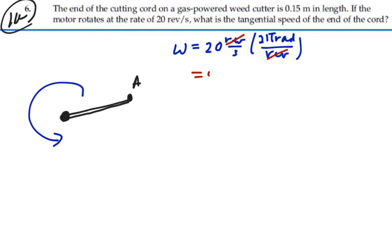and we end up with 40π radians per second, or if we calculate that out, 40 times π, 125.7 radians per second.